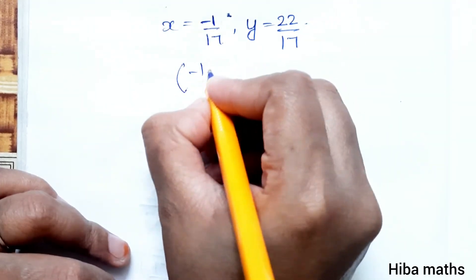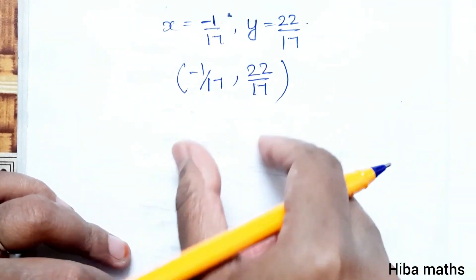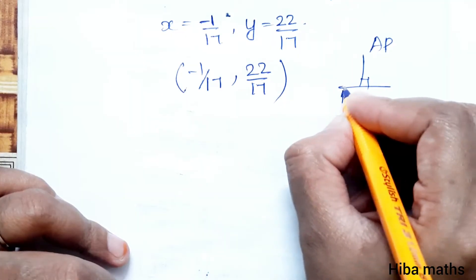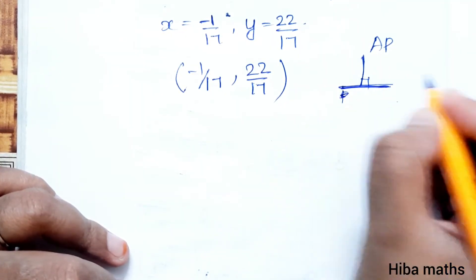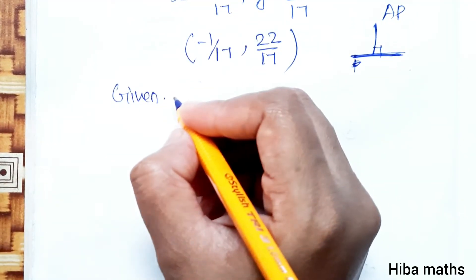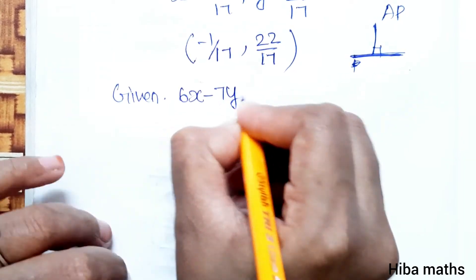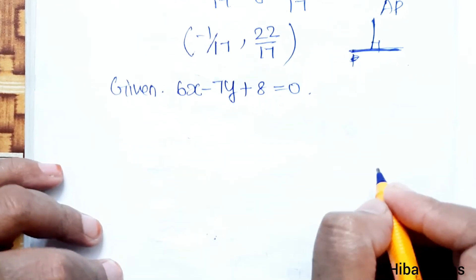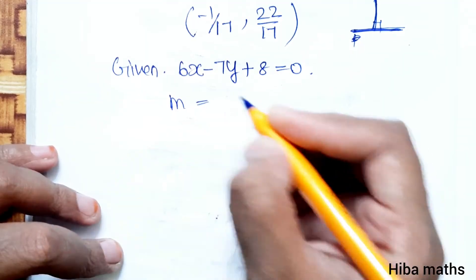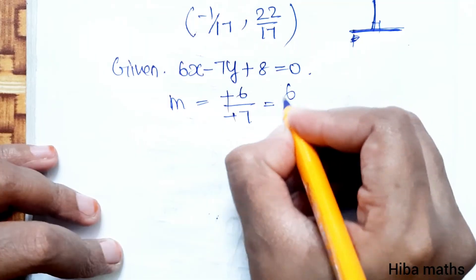The intersection point is (minus 1 by 17, 22 by 17). Now, the line given is 6x minus 7y plus 8 equals 0. This is perpendicular to our required path. The slope of this line is M equal to minus 6 divided by minus 7, which simplifies to 6 by 7.